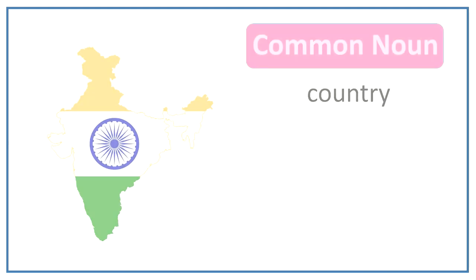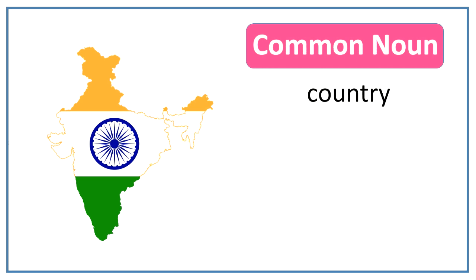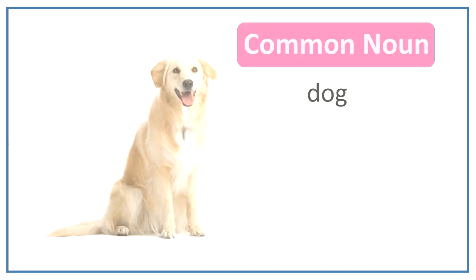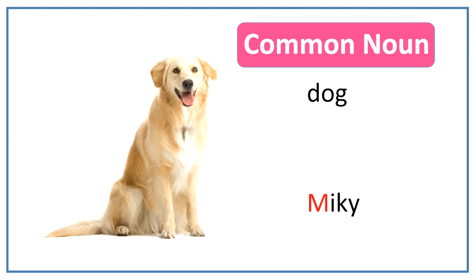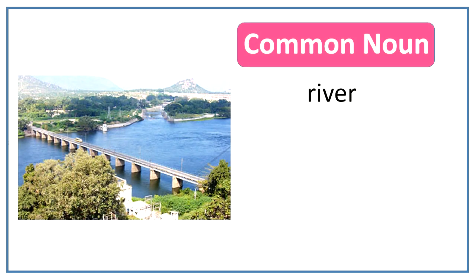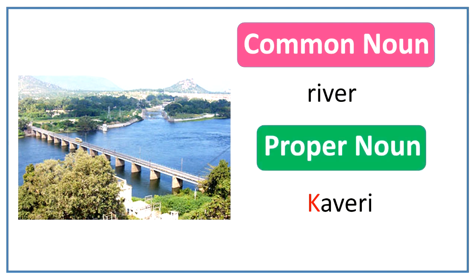In the same manner, country is a common noun while India is a proper noun. Dog is a common noun while Mickey is a proper noun. Newspaper is a common noun while Hindustan Times is a proper noun. River is a common noun while Cauvery is a proper noun.